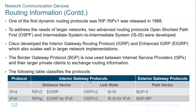Dynamic routing protocols are divided into two categories. We have interior gateway protocols — for example, within a network like Zamtel or iConnect, the routing protocols used internally are called interior gateway protocols. These are further divided into distance vector and link state.